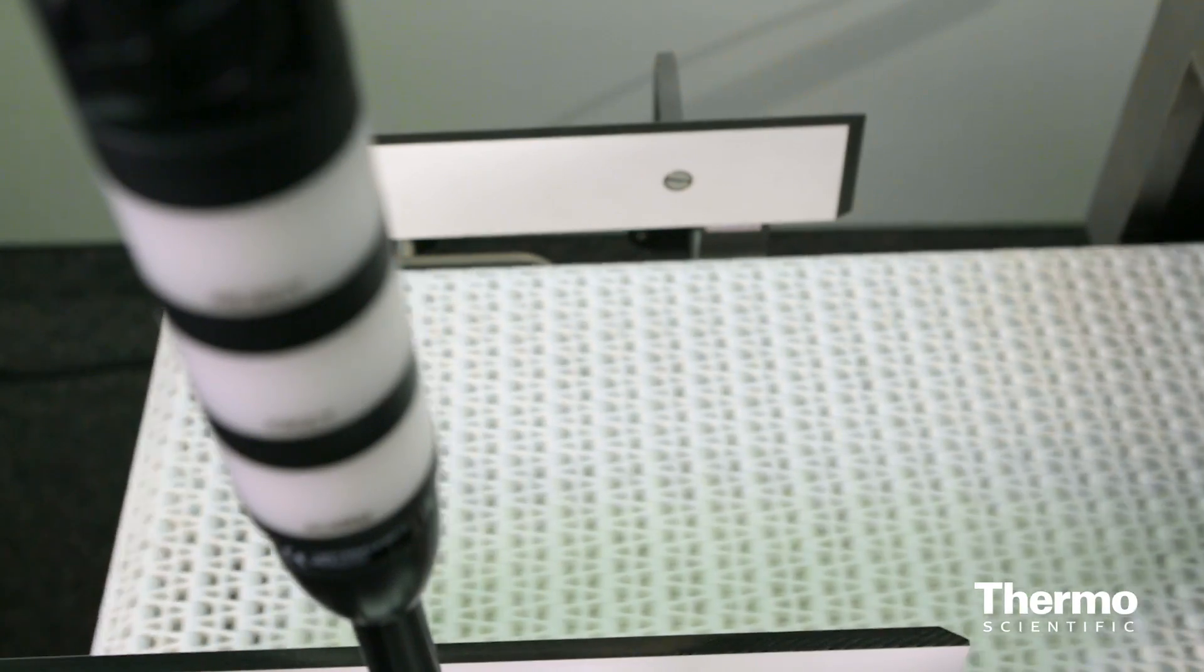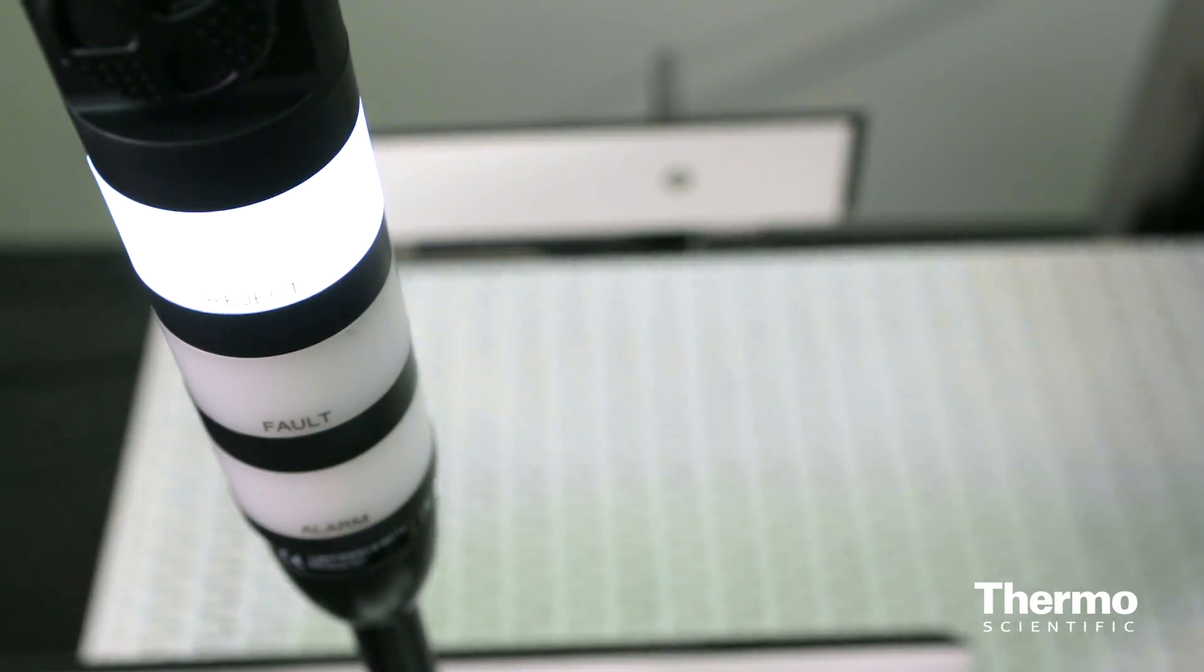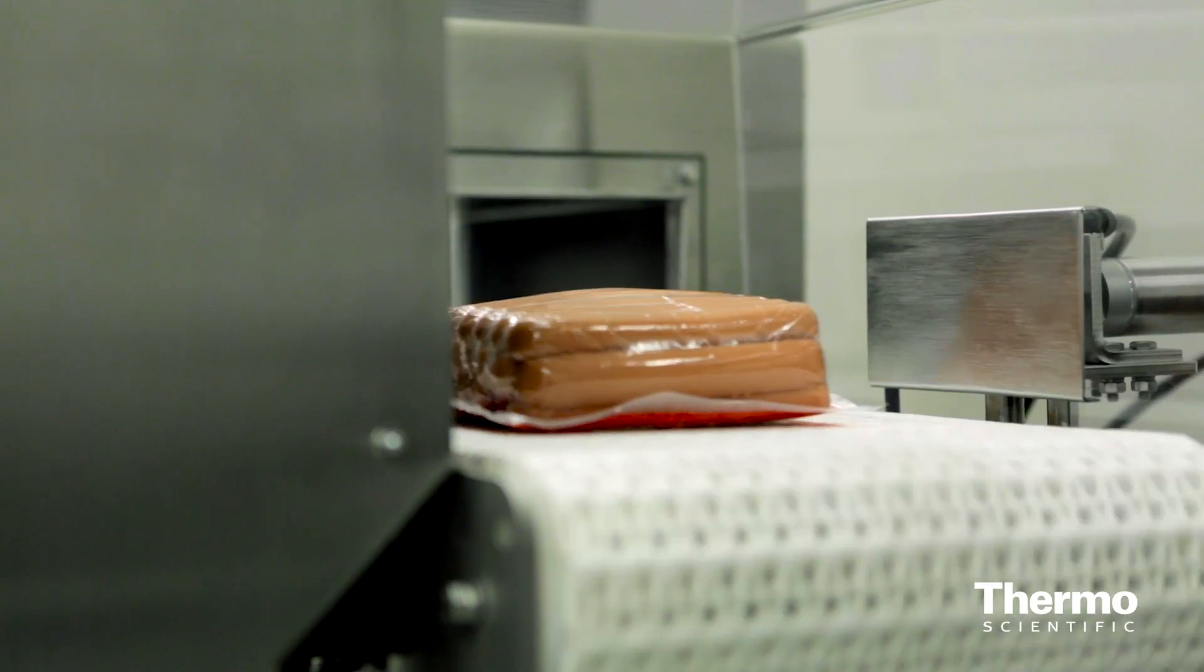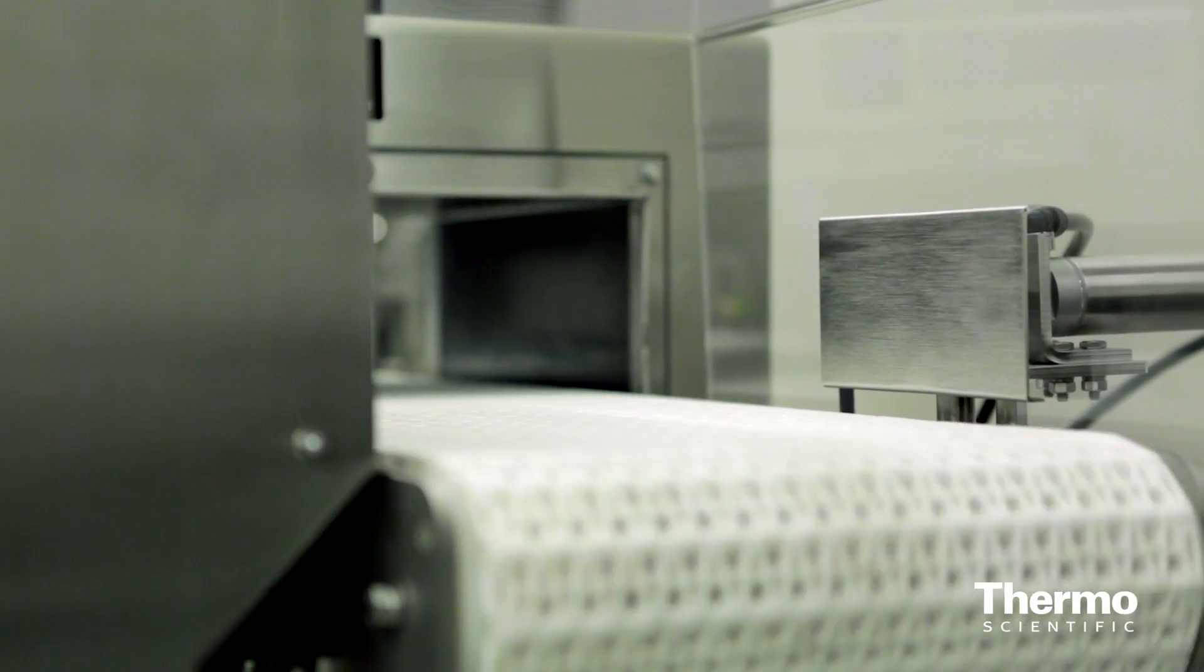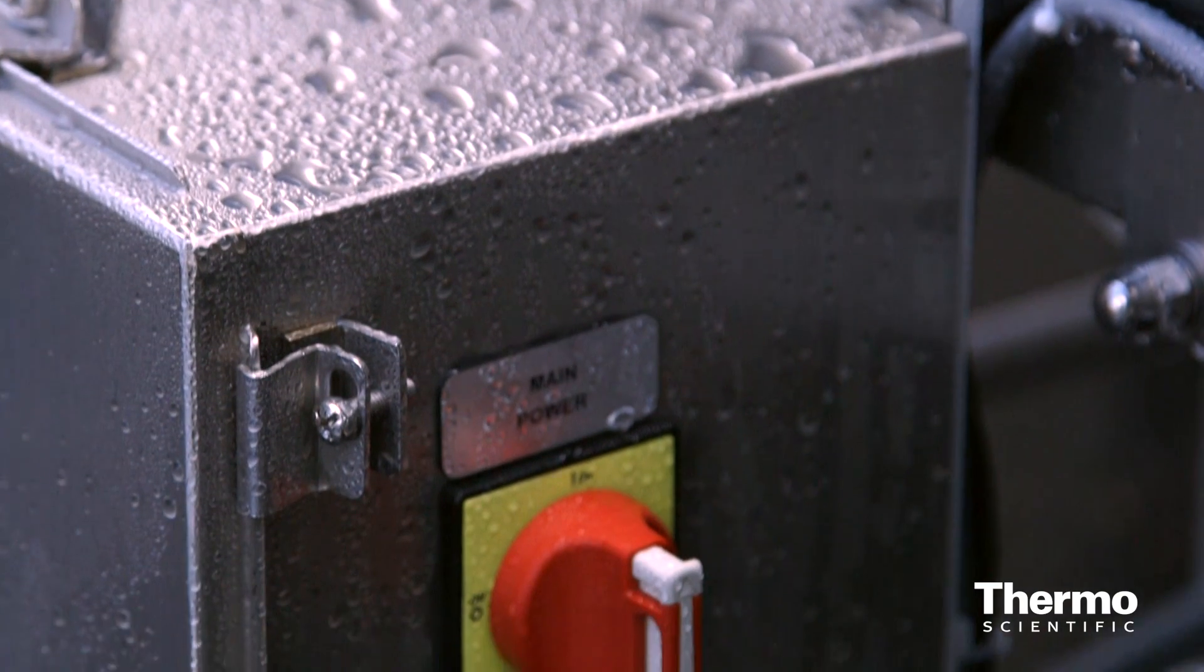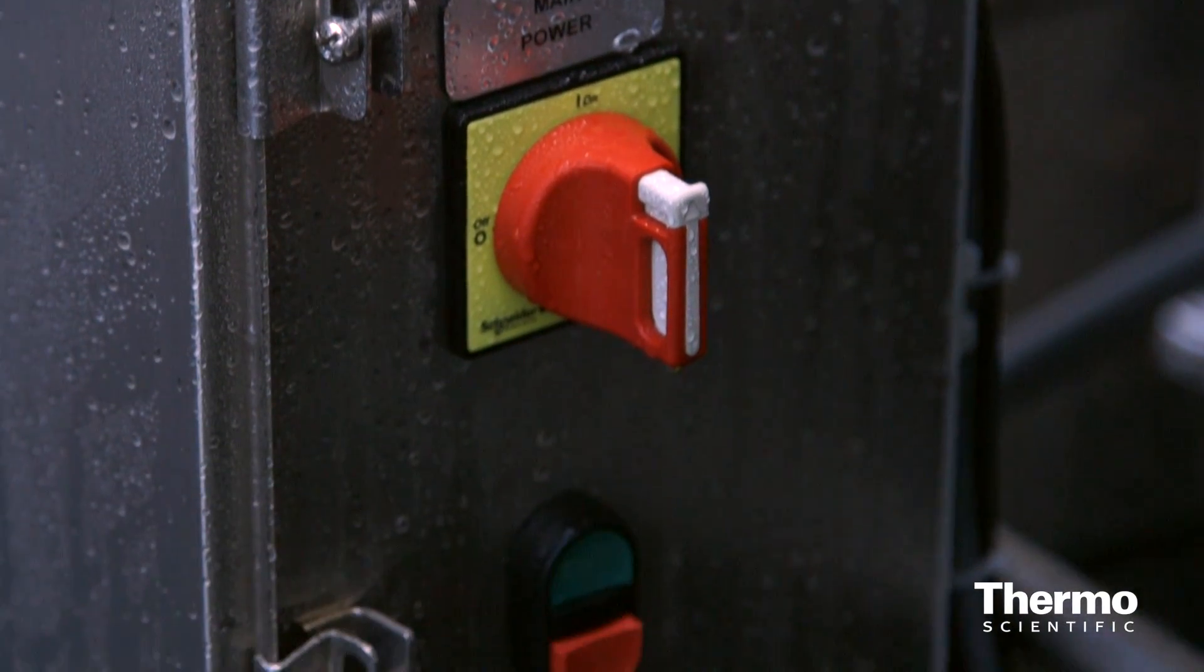The QuickFit conveyor is a modular wash-down design that draws on decades of experience engineering and manufacturing metal detection systems. It comes in a range of standard sizes and is available with fixed or variable speed.